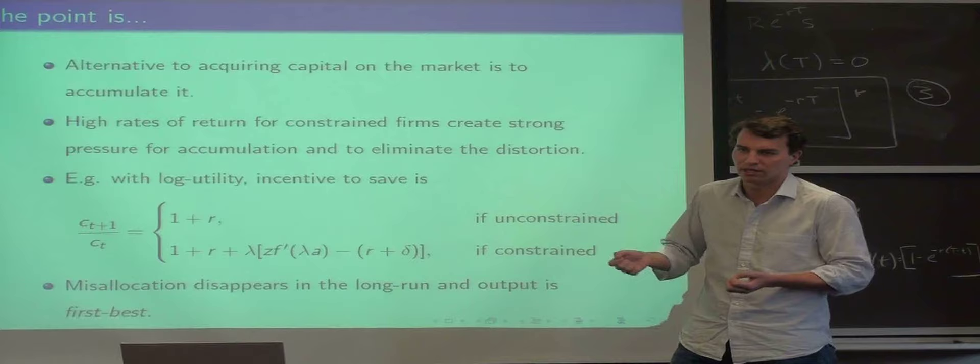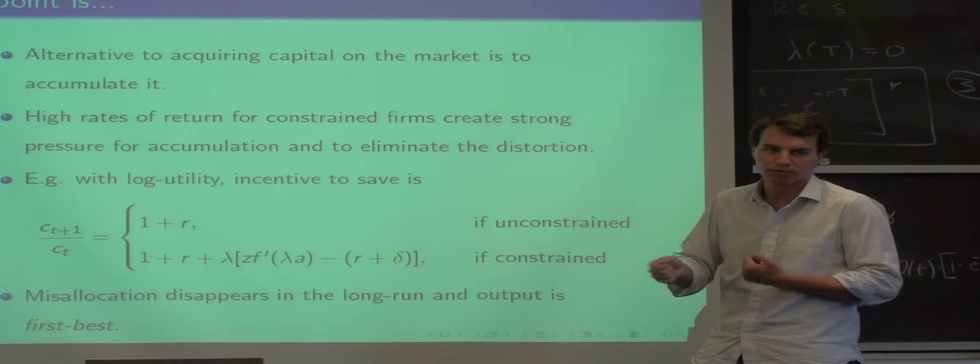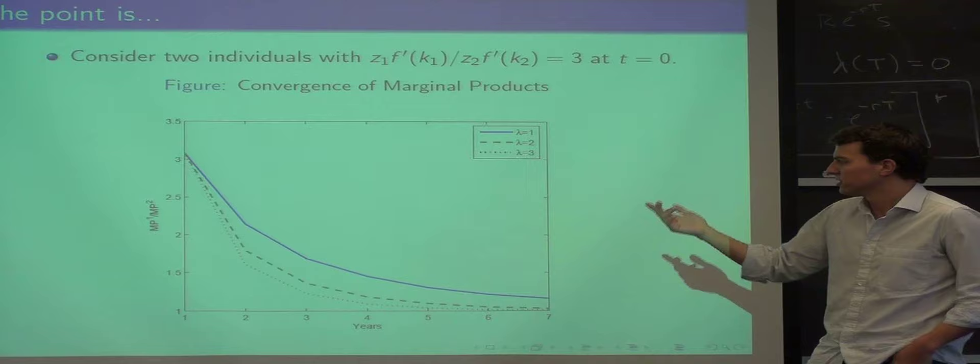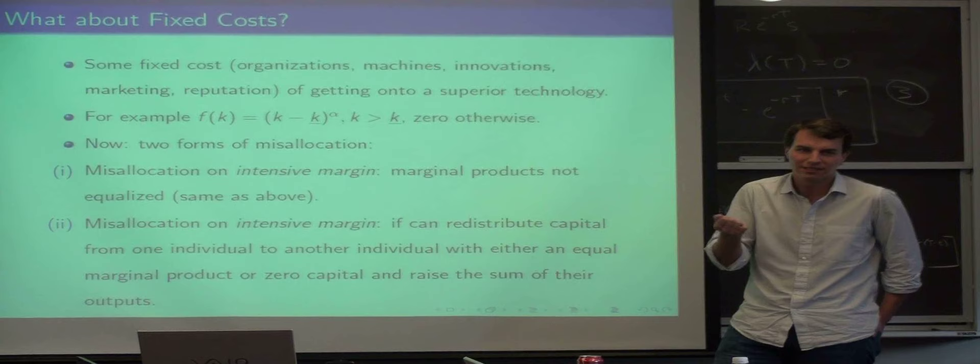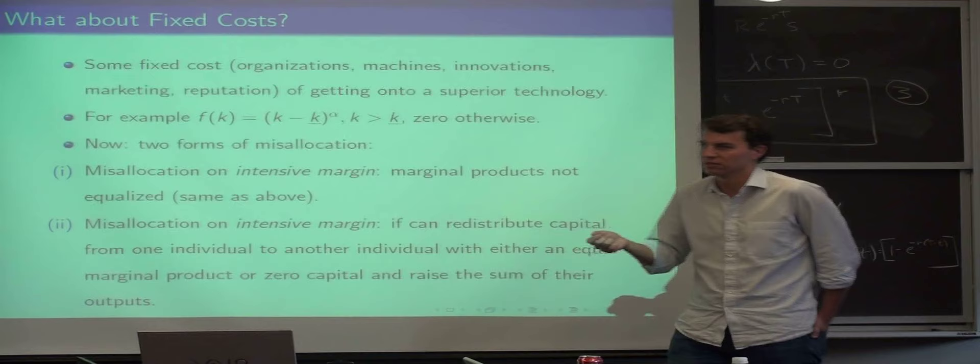The alternative to acquiring capital on the market is to accumulate it. You can just always, you know you're very high ability, the bank won't give you the money, so you're going to try to save it up yourself. Actually, if you look at a model like this, this is going to be a very strong force to eliminating this misallocation. What we can show is that very quickly this gap in marginal products is going to disappear. So something's wrong with this model, because obviously this misallocation does seem to be there in the data.